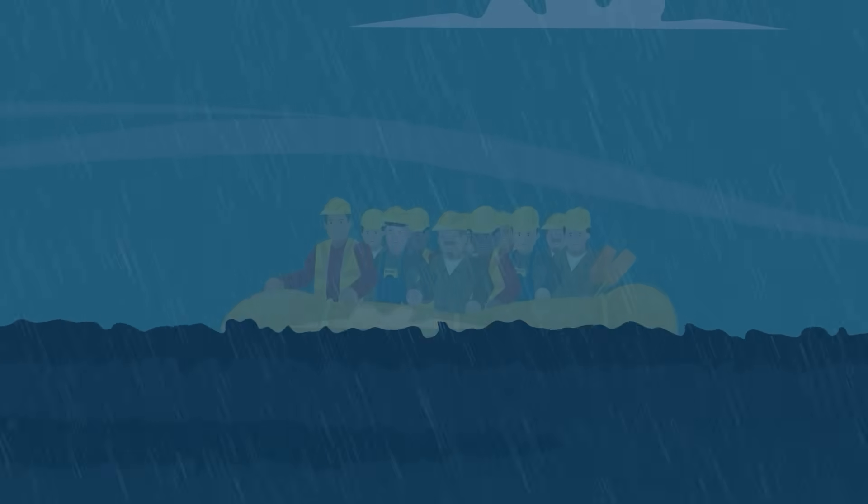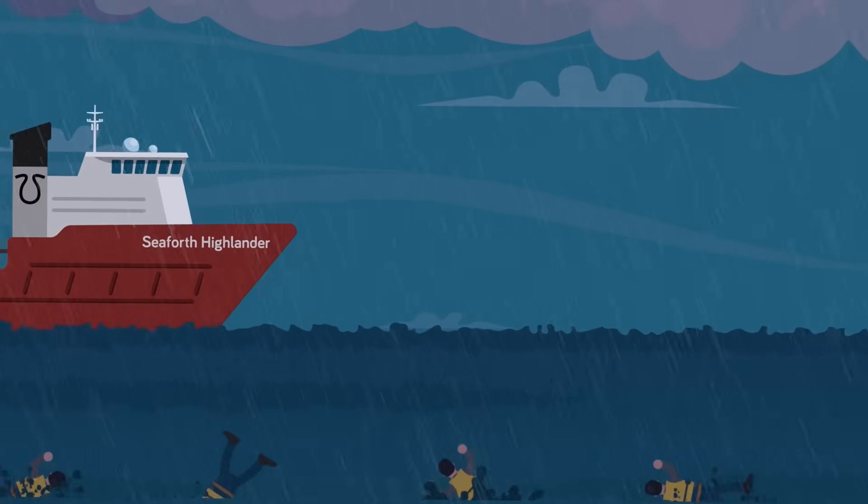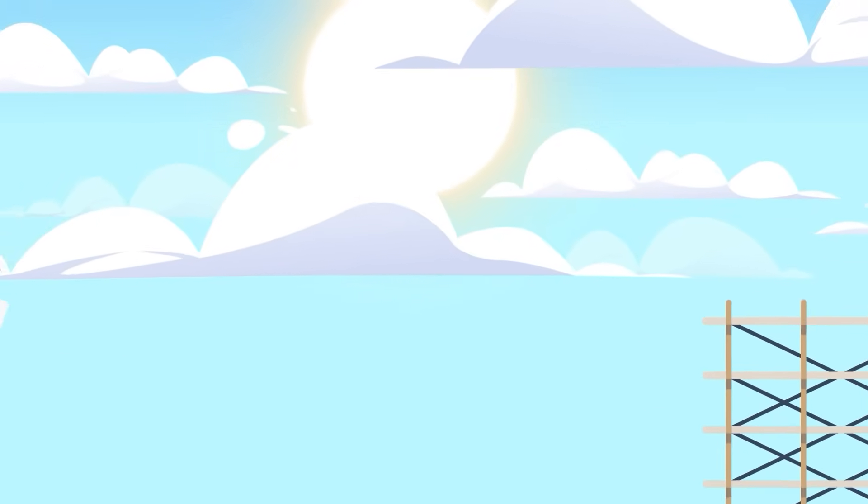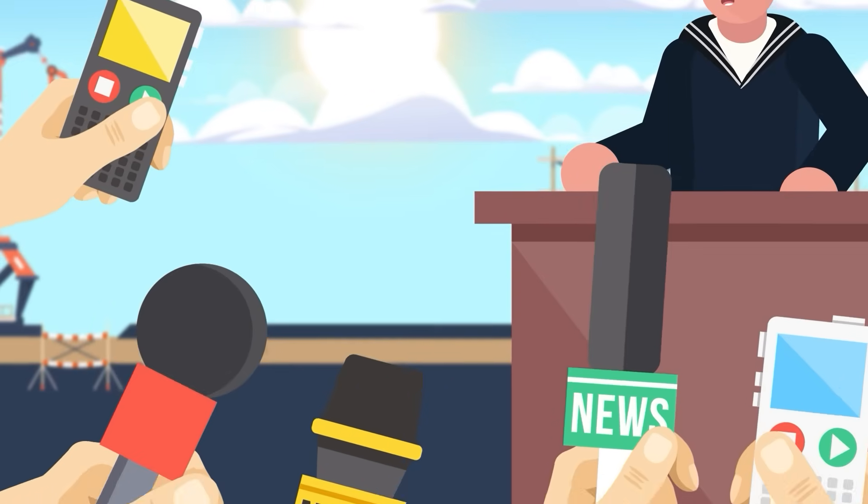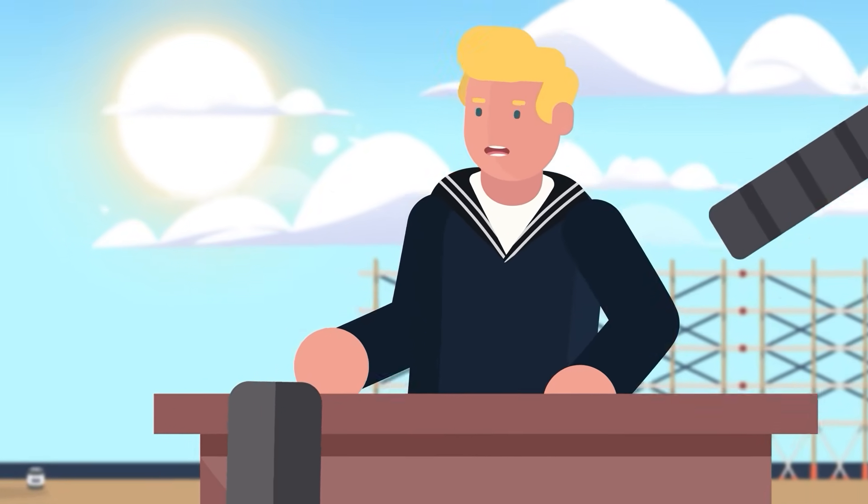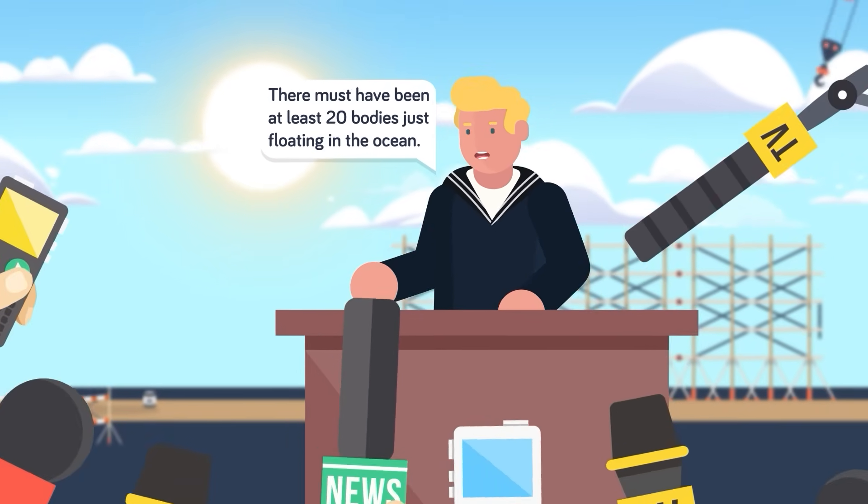Sometime after the lifeboat had hit the water, the MV Seaforth Highlander support boat arrived in the area, only to see bodies floating in the water. There were 20 crew members, at least, floating in the choppy seas, according to the later reports by witnesses aboard the standby vessel. Combined with the others aboard the lifeboat, that made a total of 56 who had made it to the water one way or another.